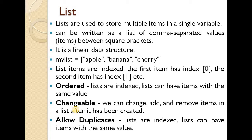We are discussing list. Lists are used to store multiple items in a single variable. It is a linear data structure. It can be written as a list of comma-separated values between square brackets, for example: myList = ['apple', 'banana', 'cherry'].